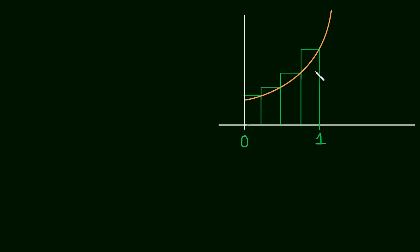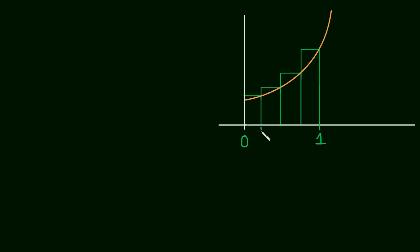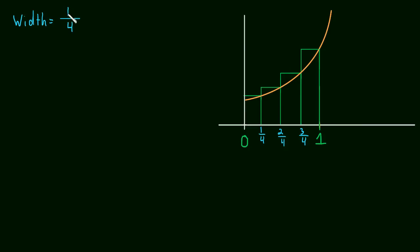We've already talked about using four rectangles to estimate the area under this curve. Let me just remind you what area we're talking about — it's this area right here. We already talked about how to find the width of each rectangle: the width of each rectangle is one-fourth, which was the total length of the interval divided by the number of rectangles, which is four.